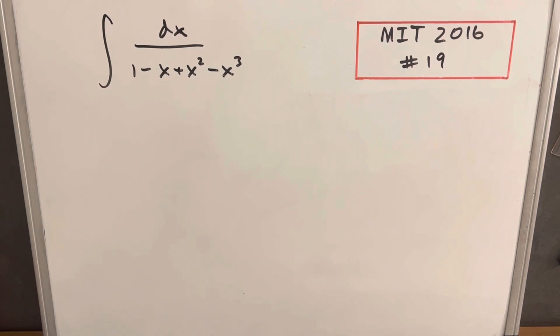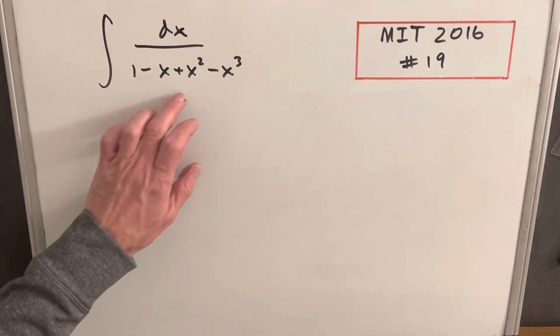We have the integral of dx over 1 minus x plus x squared minus x cubed. At first, that denominator looks pretty tough because if it was three terms, we're used to completing the square, but we have four terms here.